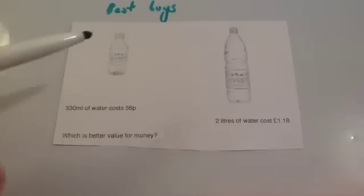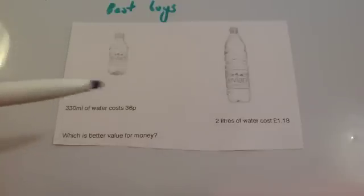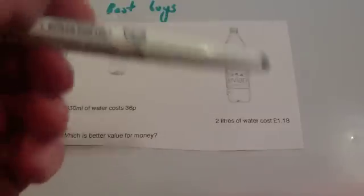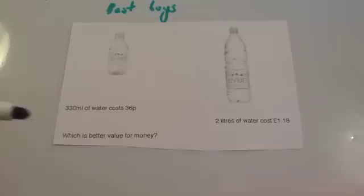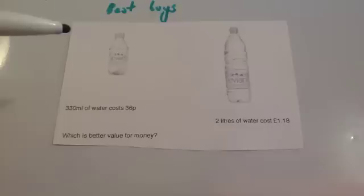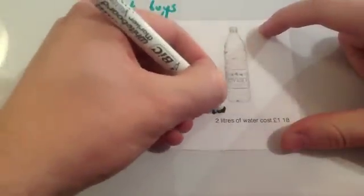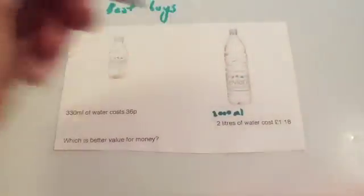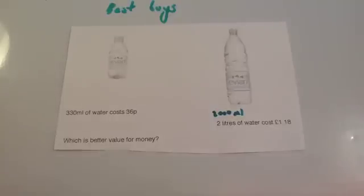This time we've got a small bottle of water which costs 36p, that's 330 mils, and a large bottle of water which is 2 litres, which costs £1.18. We've been asked which one's better value for money. I'm going to write this as 2000 milliliters. To do the second method, which is finding the same amount, would be quite time-consuming because the common multiple of 330 and 2000 is quite a large number. So I think the easiest way is really to do the first method for this one.